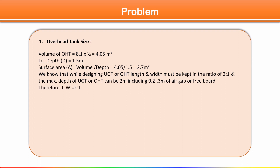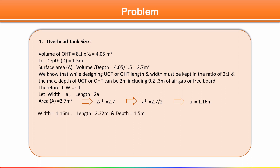With length to width ratio of 2:1, let width = a, so length = 2a. Area of rectangle = length × width = 2a × a = 2a² = 2.7 square meters. Solving: a² = 1.35, so a = 1.16 meters. Therefore width = 1.16 m and length = 2 × 1.16 = 2.32 meters, with depth assumed as 1.5 meters.